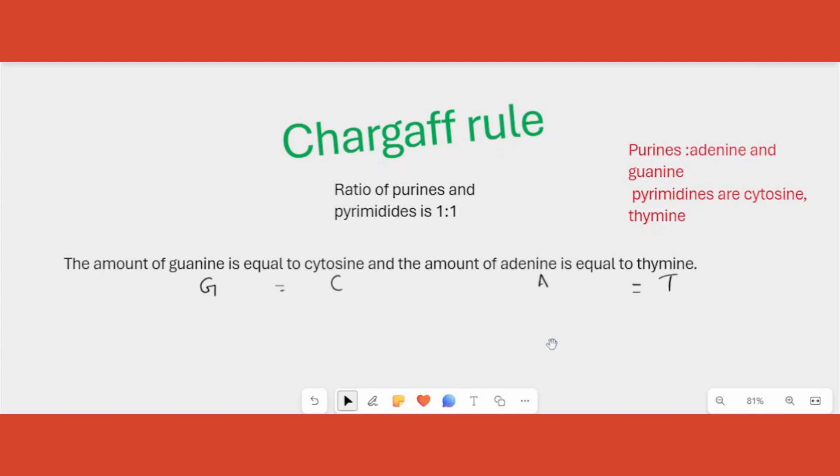First and foremost, this was a rule which helped in understanding the structure of DNA. I hope you remember the double helix model was put forward, and for understanding or coming up with a double helix model, Watson and Crick in 1953, there were two important concepts that were put into use. The first one was Chargaff's rule. Second one was the x-ray diffraction data.